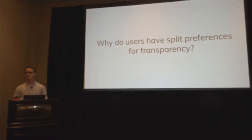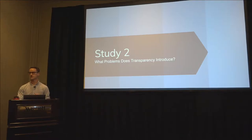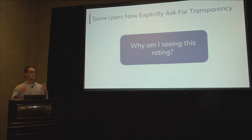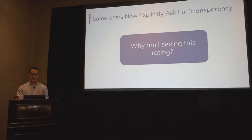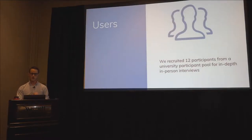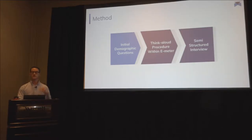Why do users have these split preferences for transparency? We followed up with a second study — an in-depth lab interview asking what problems does transparency introduce. Instead of always having transparency on, we added a button labeled 'Why am I seeing this rating?' Users, after done writing, could click it to see what is going on with their rating. We recruited 12 users from our participant pool, brought them into the lab, conducted a think-aloud, and then a semi-structured interview, following the same thematic analysis strategy.